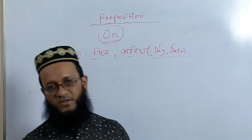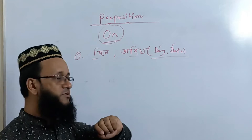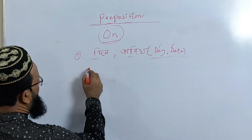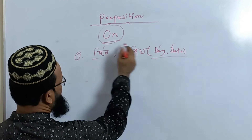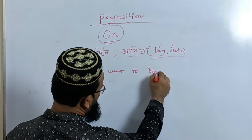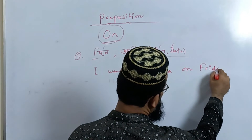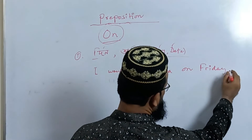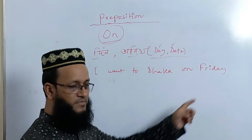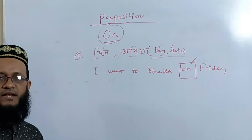So we use ON with days and dates. For example: I went to Dakar on Friday — or Saturday, Sunday, Monday, Wednesday. When a specific day is given, we use the ON preposition. So this date and day use requires the ON preposition.